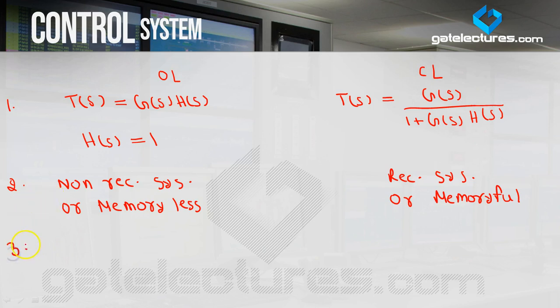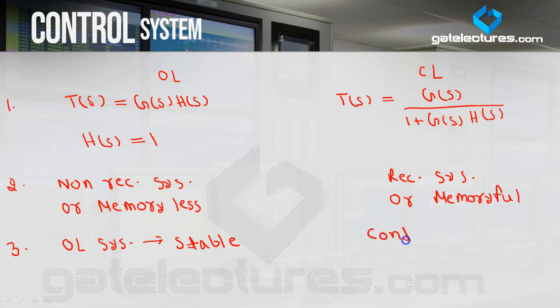The next difference: open loop systems are generally stable. Closed loop systems are generally conditionally stable — meaning they will be stable for one condition but not stable for other conditions. In a closed loop system you can control it; if your system is unstable you can make it stable by applying conditions.